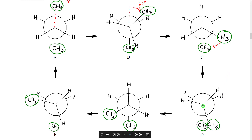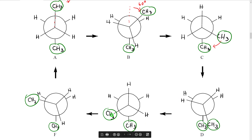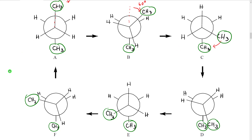Continuing to rotate, we get a conformation where the methyl groups have a zero degree angle between them — they're eclipsing each other — and the other two bonds have just hydrogens: hydrogen eclipsing hydrogen, hydrogen eclipsing hydrogen. Continuing past, we again get a staggered conformation where the methyl groups are 60 degrees apart. So conformation E is similar to conformation C, and conformation F is essentially similar to conformation B.